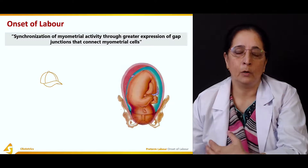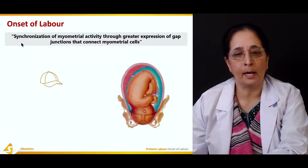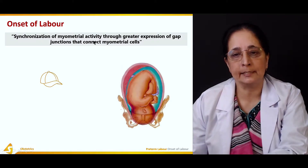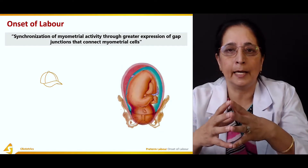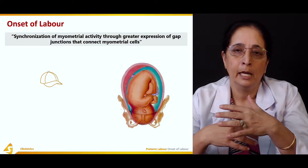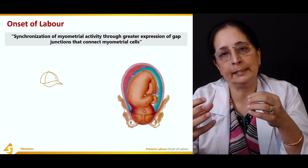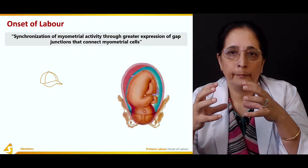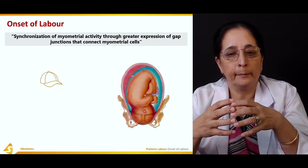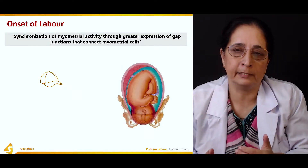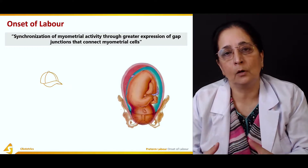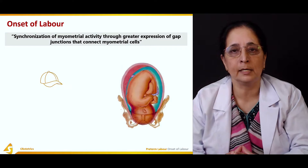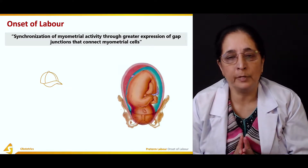The onset of labor begins mainly by the synchronization of myometrial activity through greater expression of gap junctions that connect myometrial cells. The theory behind how labor begins is by the increase in gap junctions that keep myometrial cells close together. This brings about the onset of labor — synchronization of myometrial activity starts contractions and causes the onset of labor.